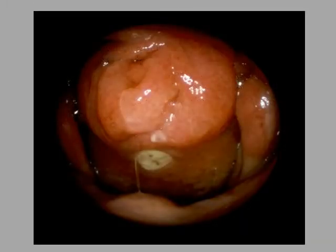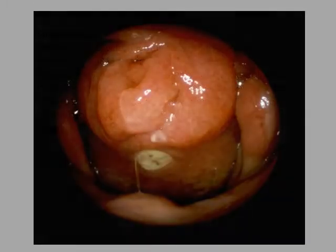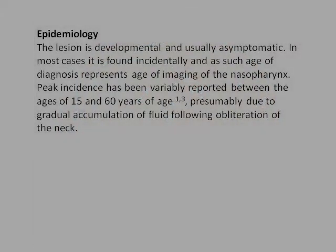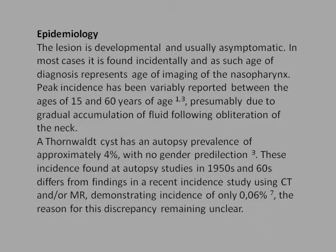The Thornwald cyst has an autopsy prevalence of approximately 4%, with no gender predilection. These incidences found in autopsy studies from the 1950s and 60s differ from findings in a more recent study using CT and MRI, which demonstrated an incidence of only 0.06%. The reason for this discrepancy remains unclear.